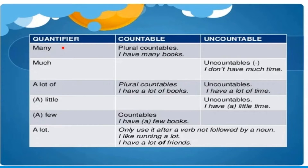Quantifiers: we have 'many' which is for countable, and 'much' which is for uncountable. 'A lot of' is for plural countables, and 'a lot of' is used for uncountables also. 'A little' is used only for uncountables, and 'few' is used only for countables. 'A lot' is only used after a verb that is followed by a noun — for example, 'I like running a lot.' So when it is followed by a noun alone, it is used.